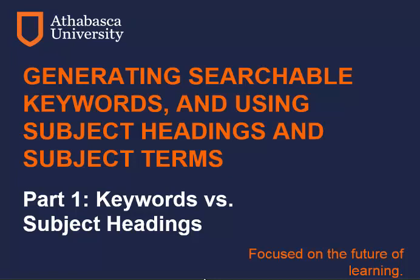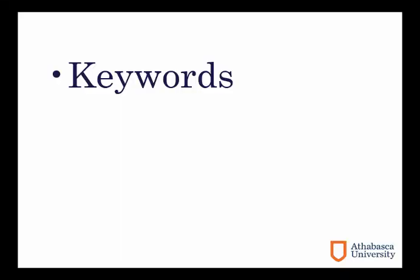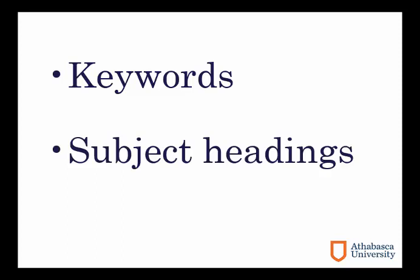In this series of tutorials, we will discuss searching library catalogs and journal article databases using keywords, subject headings, and subject terms. The first thing to understand is the difference between keywords and subject headings. Let's start with keywords.